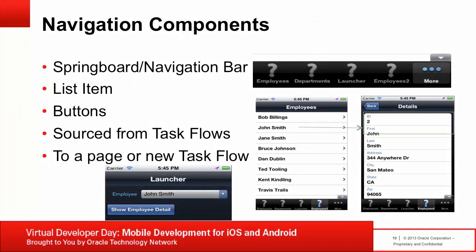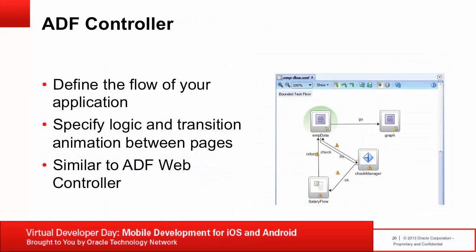For navigating between features within an ADF Mobile application, you use the springboard or navigation bar, where each item represents a feature. To navigate between AMX pages within a feature, you use list items or command buttons, with navigation logic coming from task flows. ADF controller defines the page flow, specifying logic and transition animation between pages. Its behavior is similar to the ADF Faces web controller, though the implementation is completely different. ADF Mobile controller supports only the subset of task flow components needed by a mobile application.